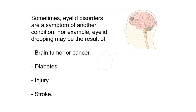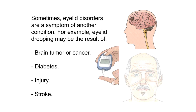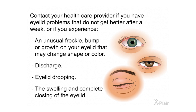Sometimes eyelid disorders are a symptom of another condition. For example, eyelid drooping may be the result of a brain tumor or cancer, diabetes, injury, or stroke. Contact your health care provider if you have eyelid problems that do not get better after a week, or if you experience an unusual freckle, bump, or growth on your eyelid that may change shape or color, discharge, eyelid drooping, or the swelling and complete closing of the eyelid.